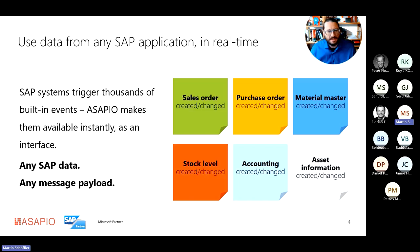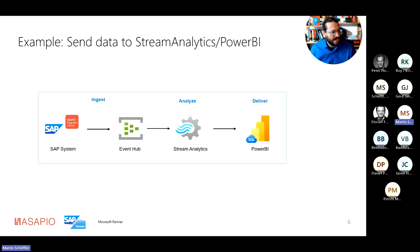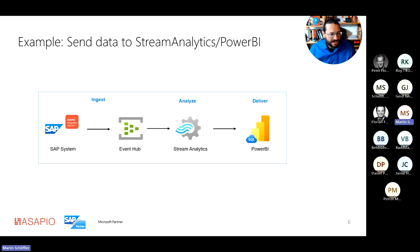Rather than staying on the slides, I want to show one example that we have configured in our system. It is an example that sends sales order data to an Event Hub for distribution. We have attached a Stream Analytics job to read that data and post it for consumption by a Power BI dashboard, so that you have an up-to-date view of what is happening to your sales data. I want to quickly switch into the SAP system now to show how that would be configured in our tool.